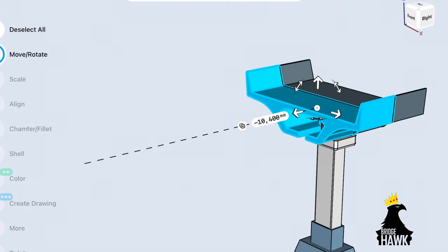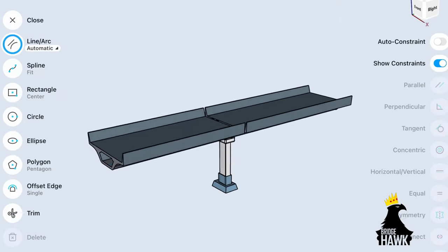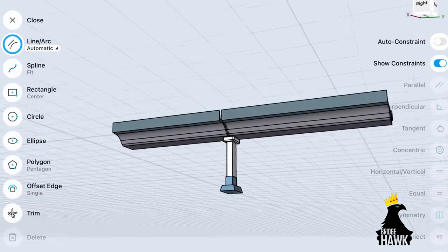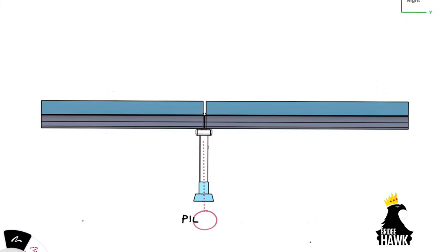In our previous video, we have seen the different types of seismic arresters in bridge design. We shall now look at seismic arresters which act as both longitudinal and transverse seismic arresters. For better understanding, let us consider a pier flanked by two unequal spans in either direction.